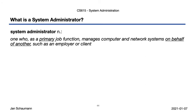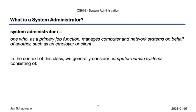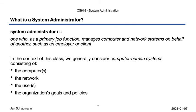Let's consider the meaning of the word system for just another second. In this class we'll focus primarily on computer-human systems — consisting of a bunch of computers, the network connecting those computers, but also the human component, since a system without users is quite literally useless. The users may act in ways that may or may not be in line with the organization's goals and policies. The primary job function of a system administrator is to manage these systems on behalf of another, such as a company, and so this strongly affects almost all aspects of the systems we manage.